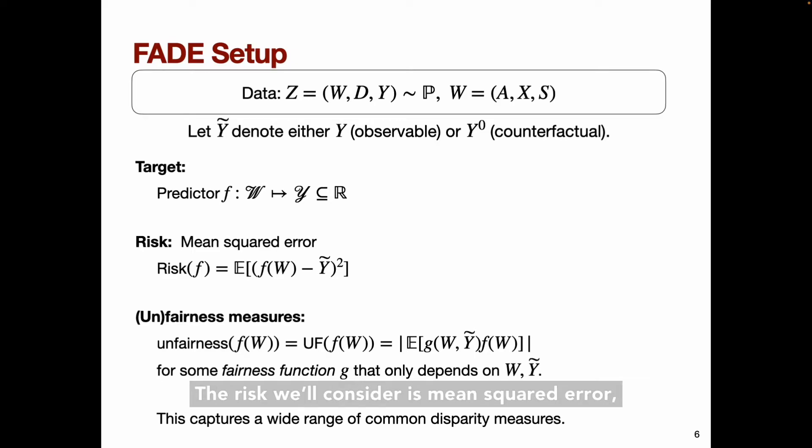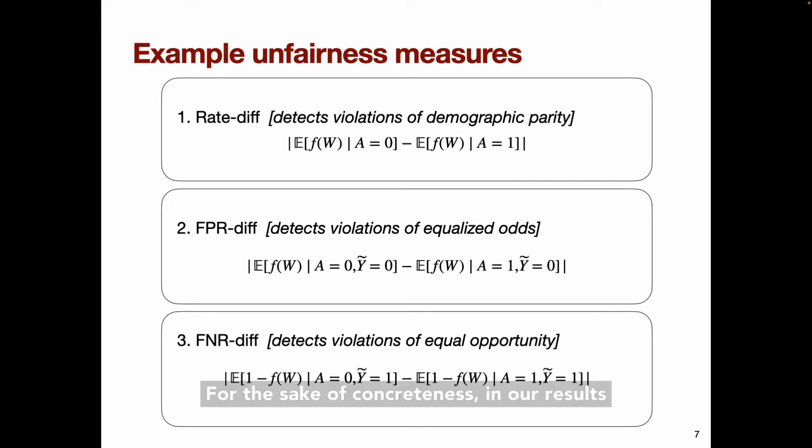The risk we'll consider is mean squared error, and we'll consider a very broad class of possible fairness measures that take this form, the absolute expected value of the product of the predictor F with some function G that depends on W and Y tilde. It turns out that this form captures a wide range of common disparity measures that are already in use, as well as many other hypothetical disparity measures.